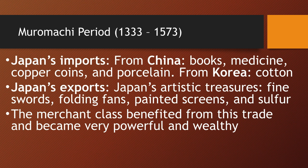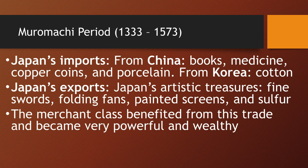Japan imported books, medicine, and technology from China, as well as copper coins and porcelain. From Korea, they imported cotton. As for exports, Japan didn't have many natural resources, but offered artistic treasures: beautiful samurai swords highly prized abroad, folding fans, painted screens with black-and-white painting, and sulfur from Kyushu. The merchant class benefited enormously from this flourishing trade with China and Korea, becoming very powerful and wealthy.